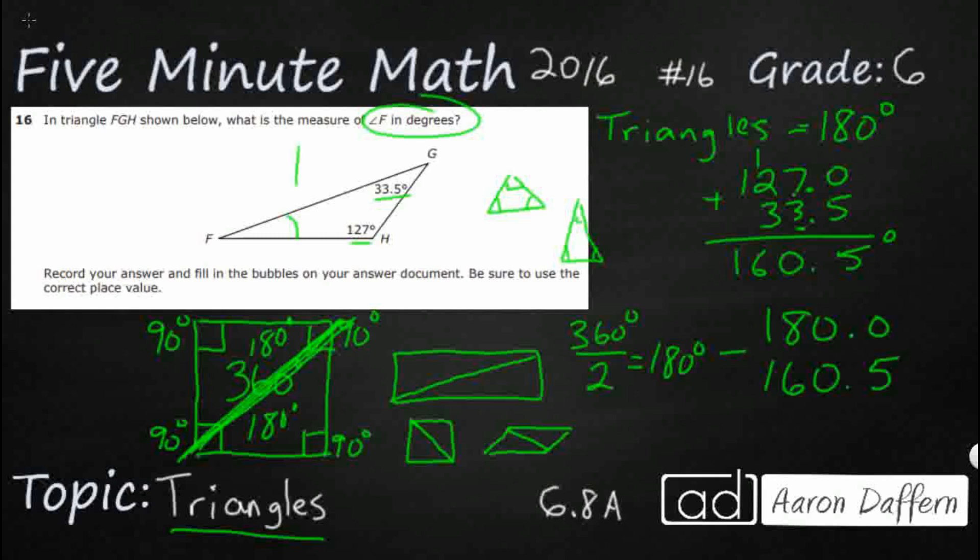Subtract that from our 180 right there, and let's see what that little tiny f angle is going to have. And we have to subtract across 0, so that's going to be a little bit of a pain. So that's going to be 10, that's 9, and there we go, 5. So 19.5 is what it takes to get up to 180. So that would be our answer, because 19.5 plus this 160 make 180.